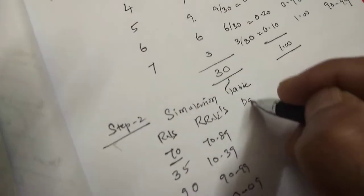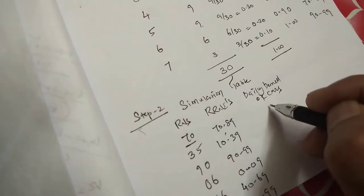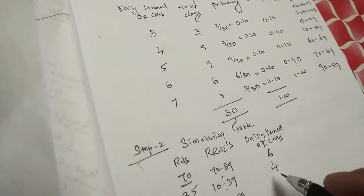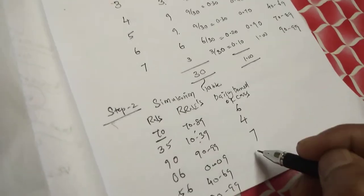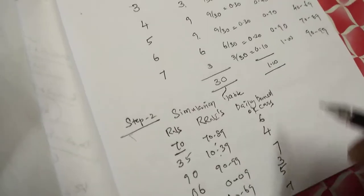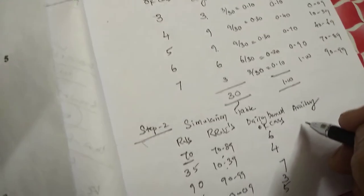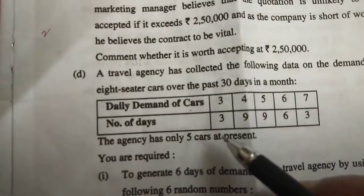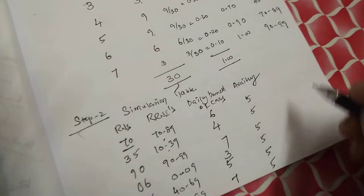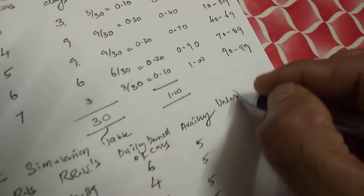Now write the daily demand of cars corresponding to each interval: 70 to 89 gives demand 6; 10 to 39 gives demand 4; 90 to 99 gives demand 7; 00 to 09 gives demand 3; 40 to 69 gives demand 5; and 90 to 99 gives demand 7. Availability: the agency has only 5 cars at present, so availability is 5 for all 6 days.